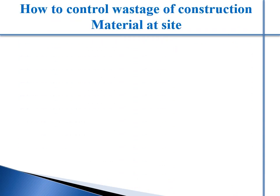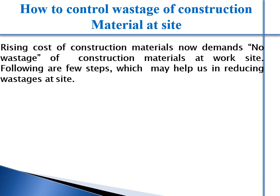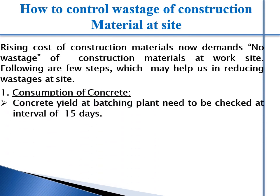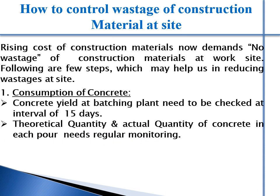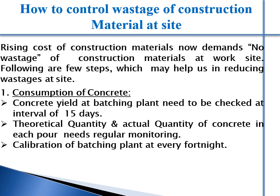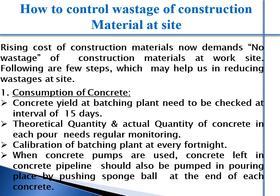How to control wastage in construction — Concreting: The yield of the batching plant needs to be checked thoroughly. Theoretical and actual quantity of concreting after each pour should be checked. Calibrate the batching plant very frequently. Delays in placing concrete after the transit mixer arrives should be avoided to prevent slump loss and other losses.